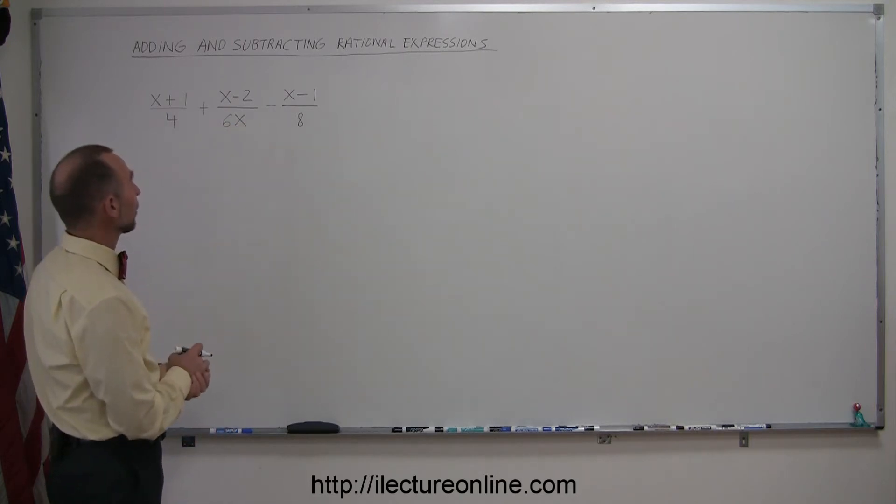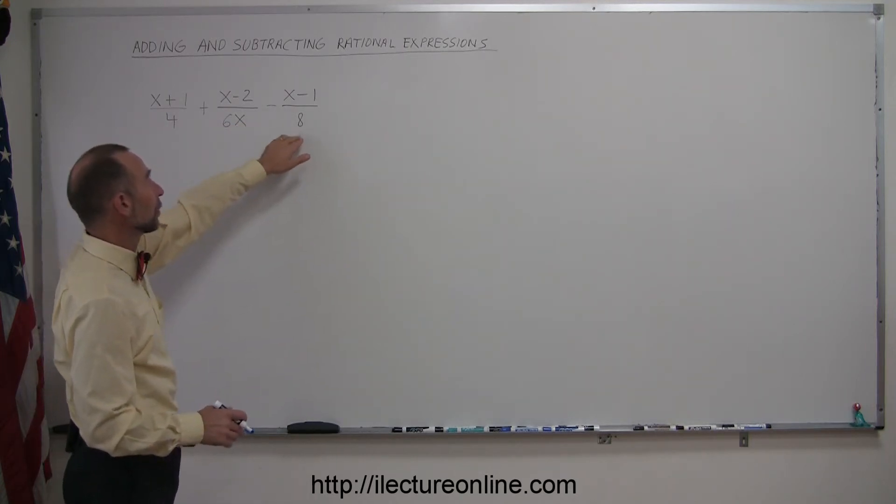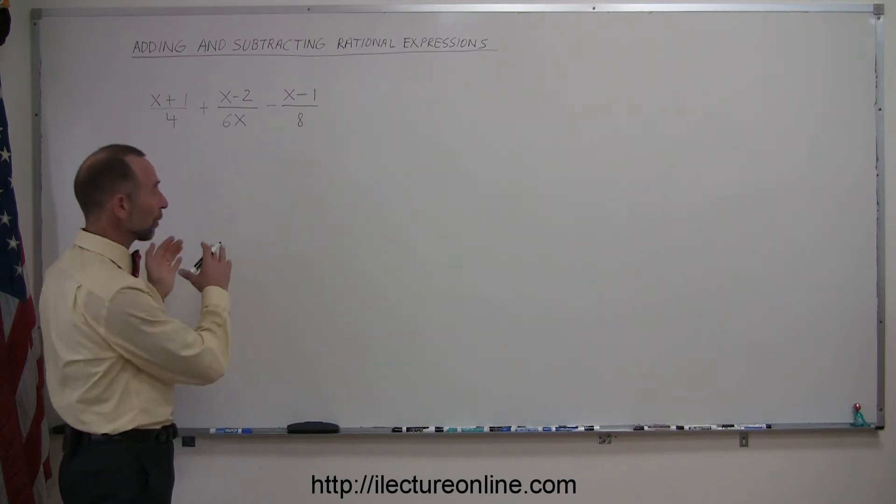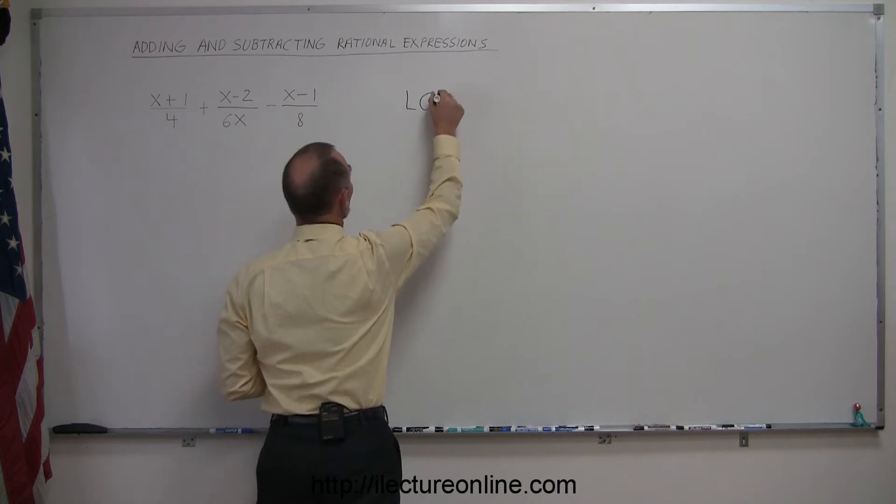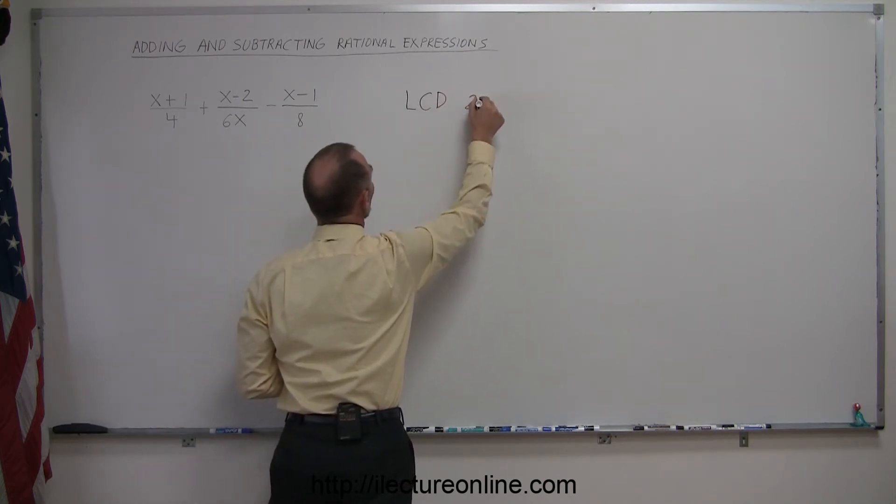So an easy way to find the lowest common denominator is to say, I'm going to double, triple, quadruple the large one and see if the smaller ones fit into that. So the LCD in this case is easily seen to be 24x.